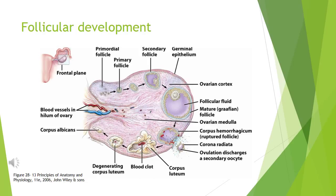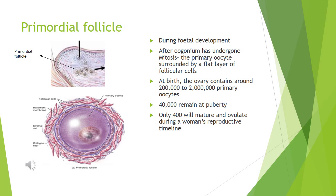This diagram shows an overview of the different stages of follicular development in one ovary, and each stage will be looked at in closer detail. The primordial follicle is present during fetal development and is a primary oocyte surrounded by a flat layer of follicular cells. At birth, the ovary contains 200,000 to 2 million primary oocytes, with 40,000 remaining at puberty, and only 400 will mature and ovulate.